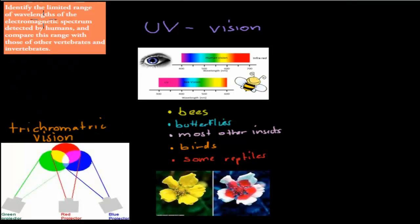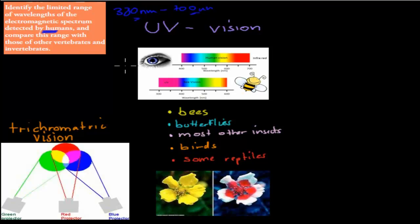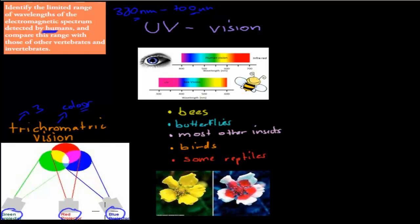Because we need to identify the limited range of wavelengths detected by humans, humans can see about 380 nanometers to 700 nanometers — that's roughly our visible wavelength range. We need to compare that to different vertebrates and invertebrates. Humans have trichromatic vision — 'tri' means 3, 'chromatic' means color — so we have green, red, and blue cones. By combining these three, we can see yellow, violet, and all other colors.